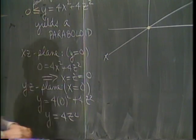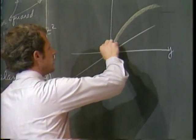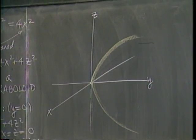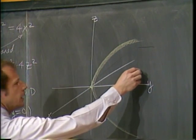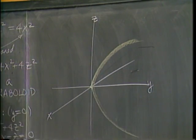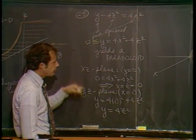How about in the yz plane? This is when x equals 0. The trace you get there is y equals 4 times 0 squared plus 4z squared. There's your parabola, y equals 4z squared in the yz plane.